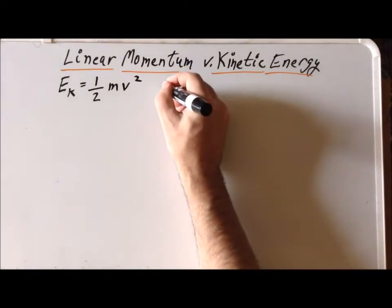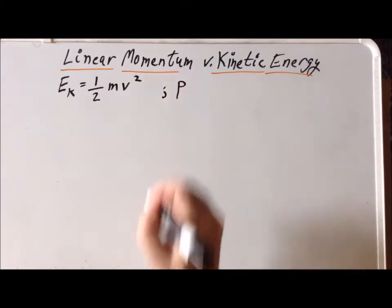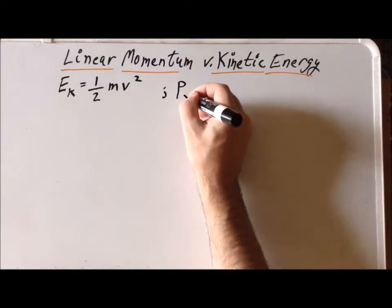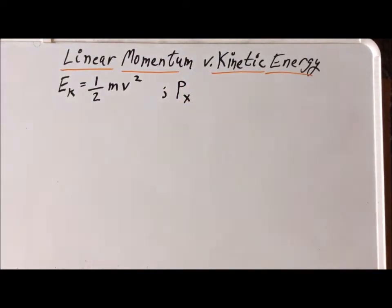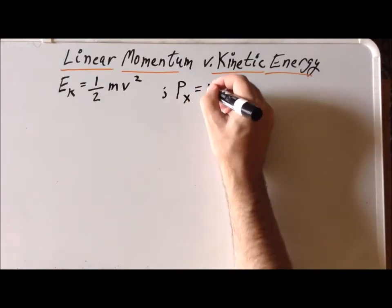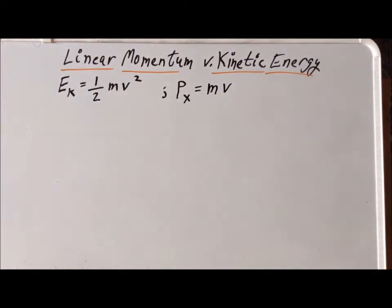For the linear momentum, we use the symbol P for momentum, and if we're talking about the momentum in the x-direction, we put a little x as a subscript, and the magnitude here is going to be the mass times the velocity in the x-direction. So now let's see how we can write an expression for the kinetic energy in terms of the linear momentum.